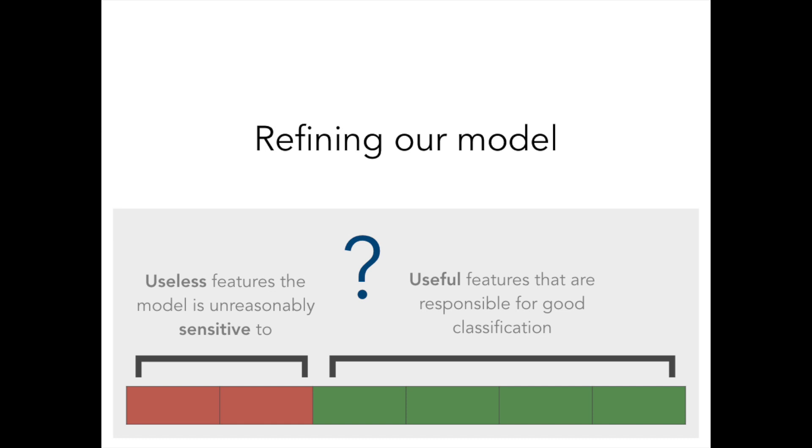Under that model, crafting adversarial examples doesn't really change anything meaningful about the input, and so learning anything about the true class boundary from adversarial examples would be impossible. Our experiment prompts us to think about adversarial examples in a different way, resulting in what we'll call the robust features model.